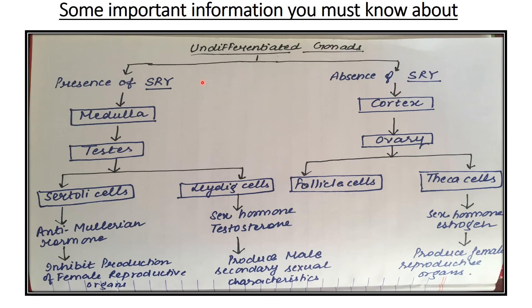Here is the summarized chart that concludes the whole topic: sex determination in humans. The determination of sex in human beings is done by sex chromosomes. Females have XX in their somatic cells while males have XY chromosomes. Development of testes occurs in males while development of ovaries occurs in females.